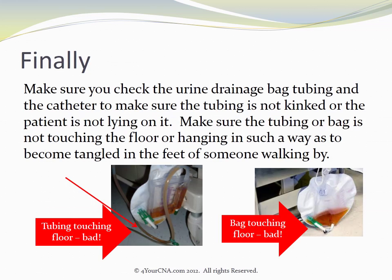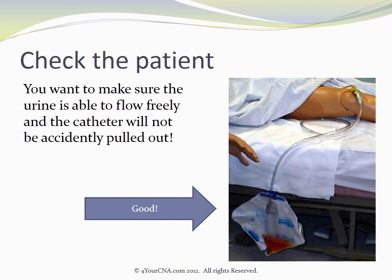Make sure you check the urine drainage bag tubing and the catheter to ensure the tubing is not kinked or that the patient is not lying on it. Make sure the tubing or bag is not touching the floor or hanging in such a way as to become tangled in the feet of someone walking by. You want to make sure the urine is able to flow freely and the catheter will not be accidentally pulled out.